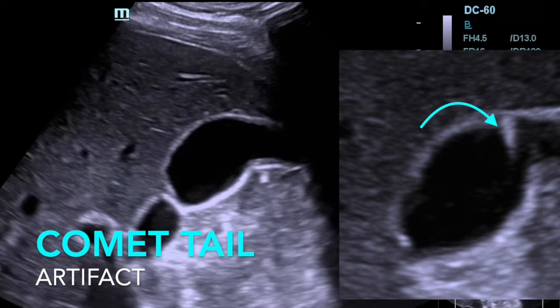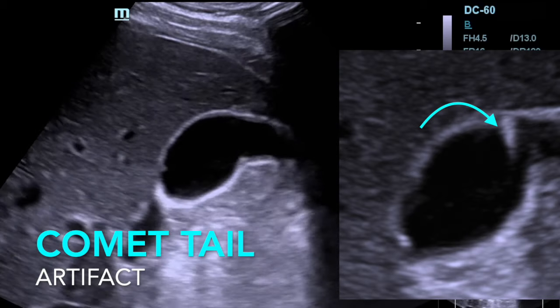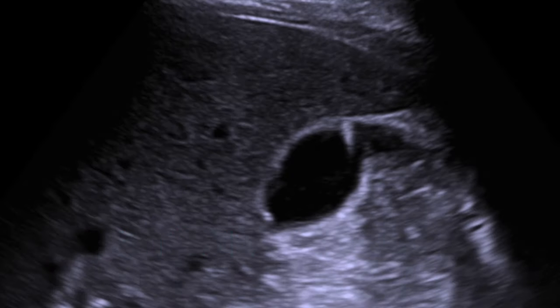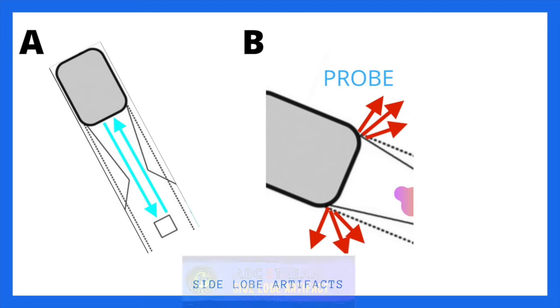Where do we see this comet tail artifact? We see it within the gallbladder. The advantage is that once you see it, you know it is because of the Rokitansky-Aschoff sinuses creating this artifact, and we can safely diagnose adenomyomatosis of the gallbladder.